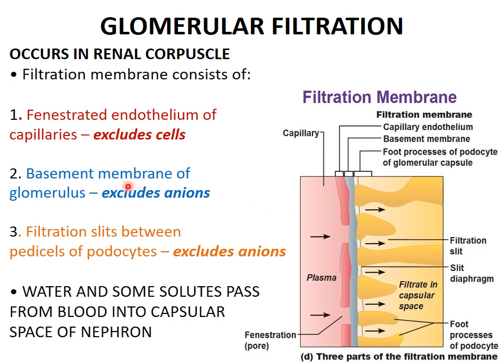There is a basement membrane in the glomerulus, visible as a gray-colored layer. This membrane is made up of certain negatively charged proteins, which repel negatively charged ions from passing through it. The basement membrane is highly negatively charged, so it favors only positively charged ions with low molecular weight.